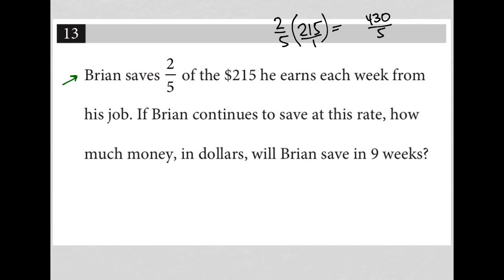Go to my calculator. Well, what is 430 divided by 5? And I get $86. So that is the exact amount of money Brian is saving each week, $86.